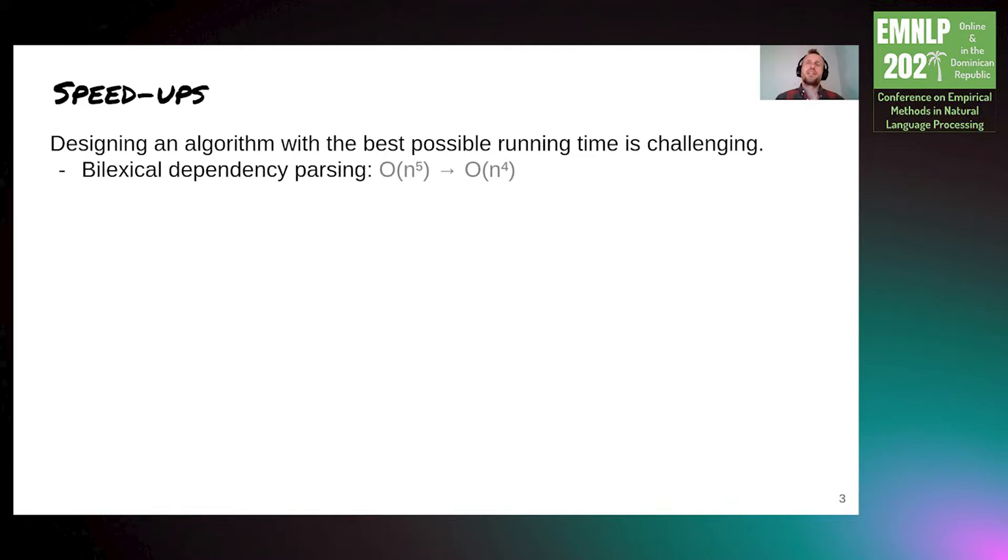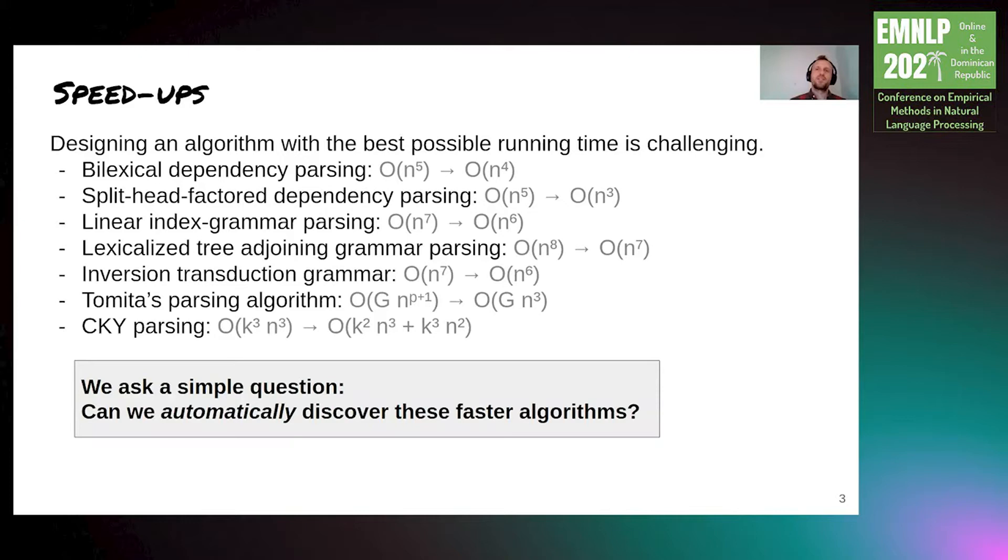Consider the following examples from the literature. Bilexical parsing was originally presented as an N-to-the-5 algorithm by Michael Collins, and was later sped up to N-to-the-4 by Eisner and Sato. Many other algorithms require similar speed-ups. In this work, we ask a simple question: Can we automatically discover these faster algorithms given an initial correct algorithm?